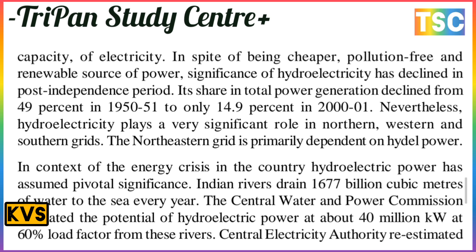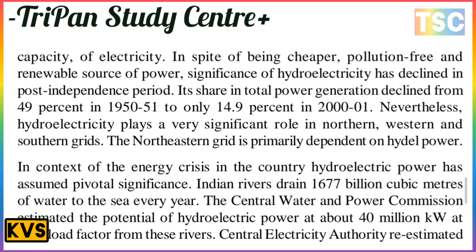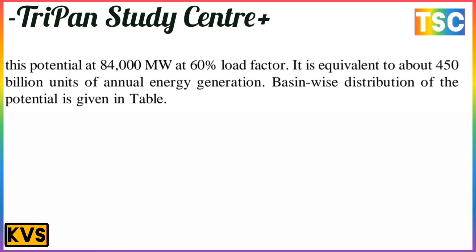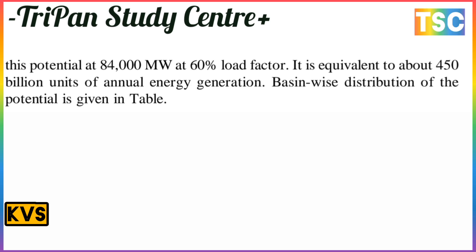The Central Water Power Commission estimated the potential of hydroelectricity power at about 40 million kilowatt at 60 percent load factor. The Central Electricity Authority re-estimated this potential at 84,000 megawatt at 60 percent load factor, equivalent to about 450 billion units of annual energy generation.